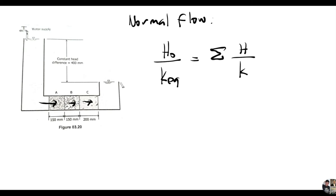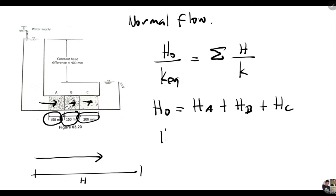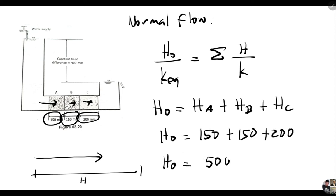Now let's substitute each value. H_O is the total height of all soils. For soil A the height is 150 mm, for soil B it's 150 mm, and for soil C it's 200 mm. Adding them together: 150 + 150 + 200, so H_O is 500 millimeters.